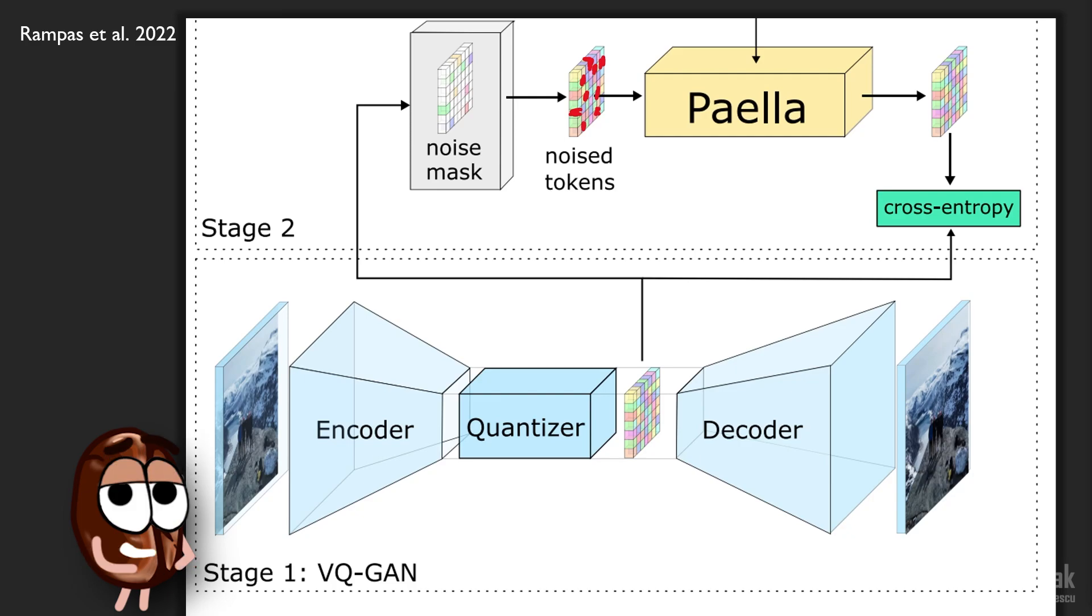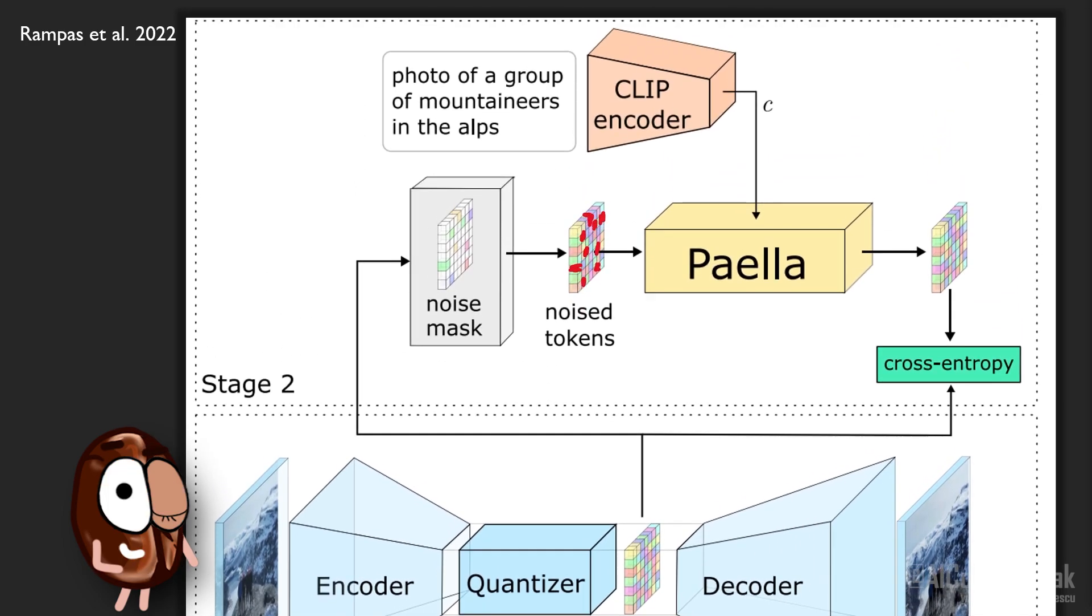You have one guess for what this condition is. Of course, it is a text representation coming from clip embeddings. It could be anything, like class labels or semantic segmentation maps, but to do text-conditioned image generation, the authors take the text, run it through clip's text branch to get a text representation, and Paella learns through cross-entropy to reproduce the uncorrupted code words of the image.